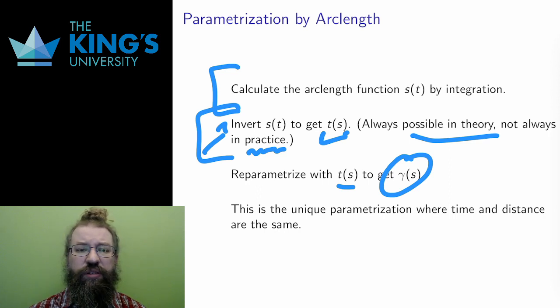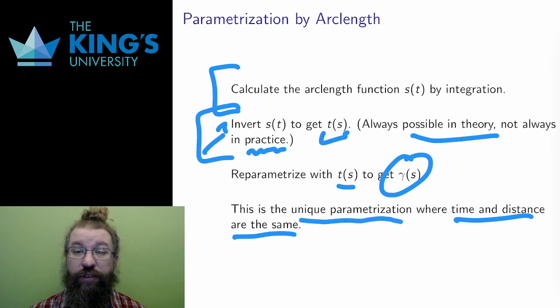So why is it special? Well, by changing to the parameter S, the length is now the parameter. This means that the curve always starts at S equals 0, and when S equals 1, the movement has exactly been one unit of length. And when S equals 2, exactly two units of length, and so on. This is the unique parametrization where time and distance are the same.